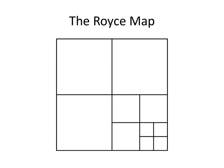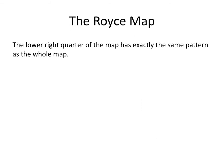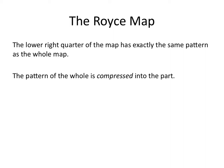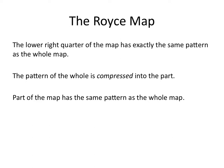But wait, now there's even more to include — and it will just keep going. But if the map of Wyoming is a perfect map, then it's just all there: an infinitely nested structure. The lower right-hand quarter of the map has exactly the same pattern as the whole map. The pattern of the whole is compressed into the part. That's compression. Part of the map has the same pattern as the whole map, and the map is infinite.